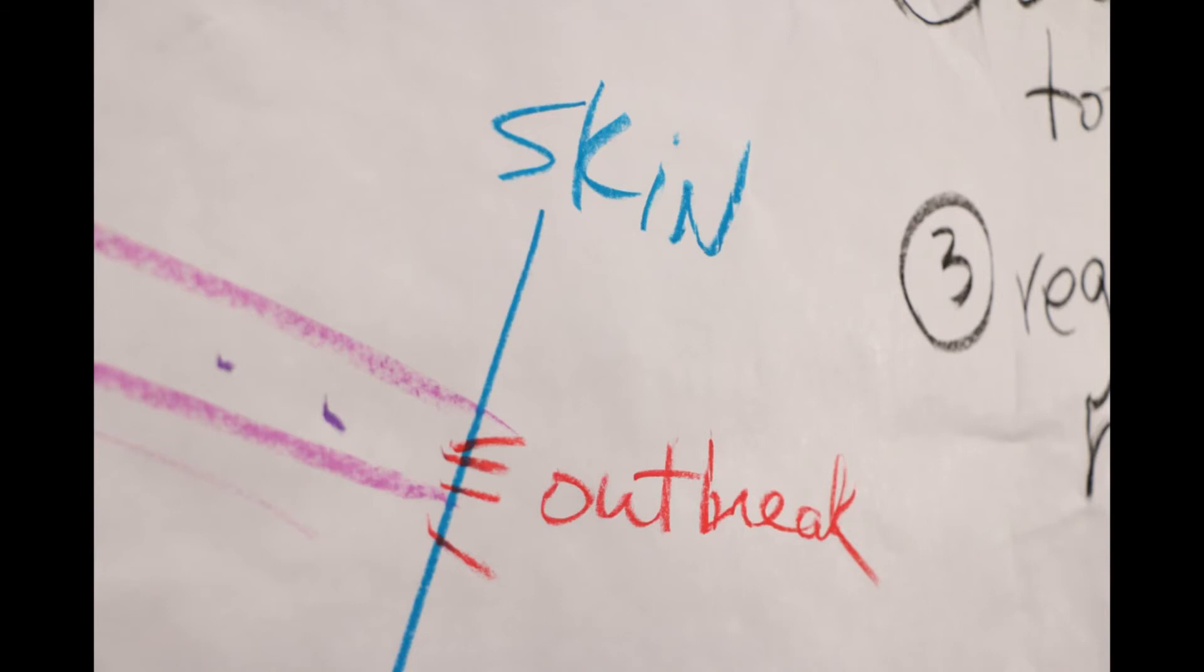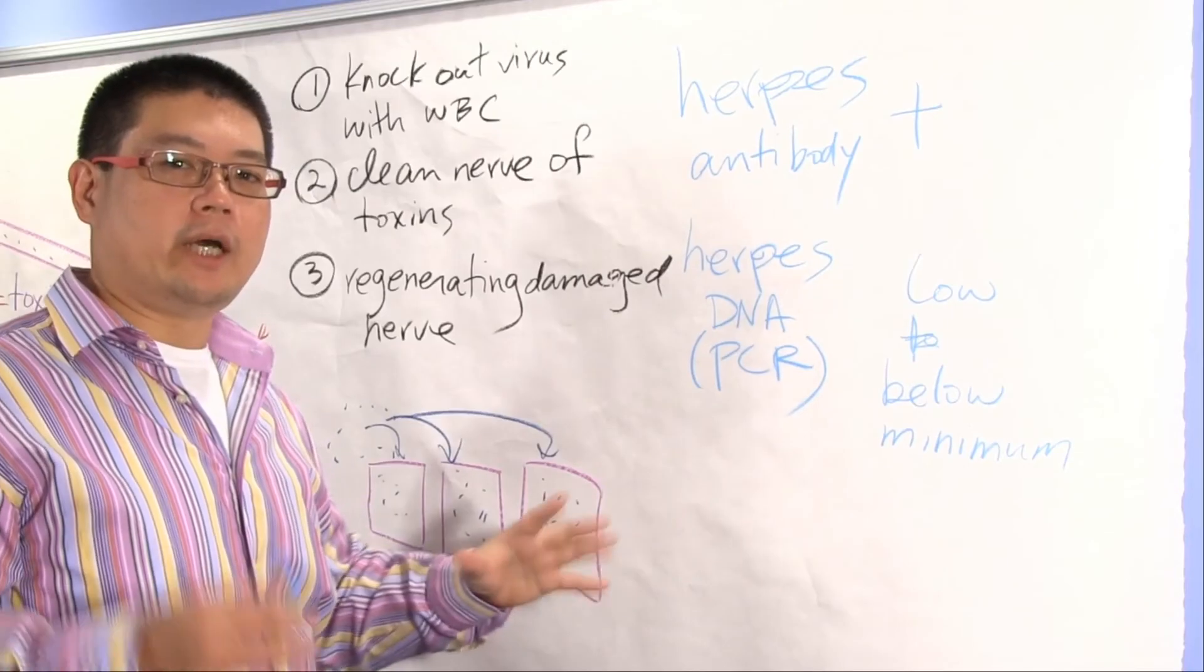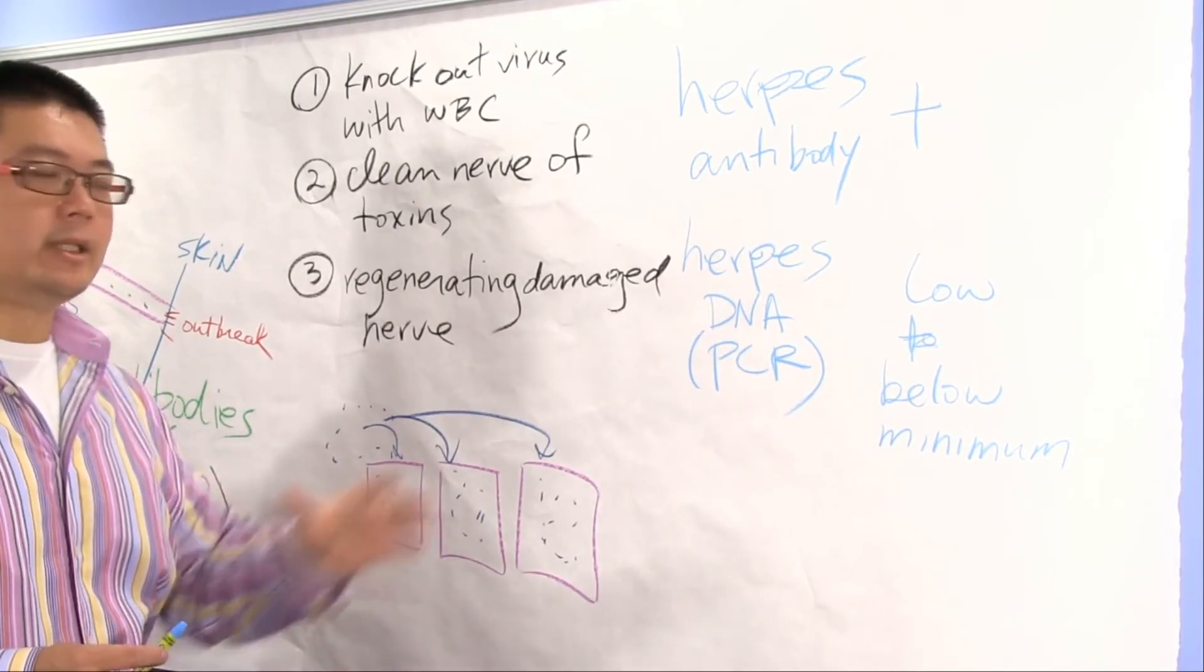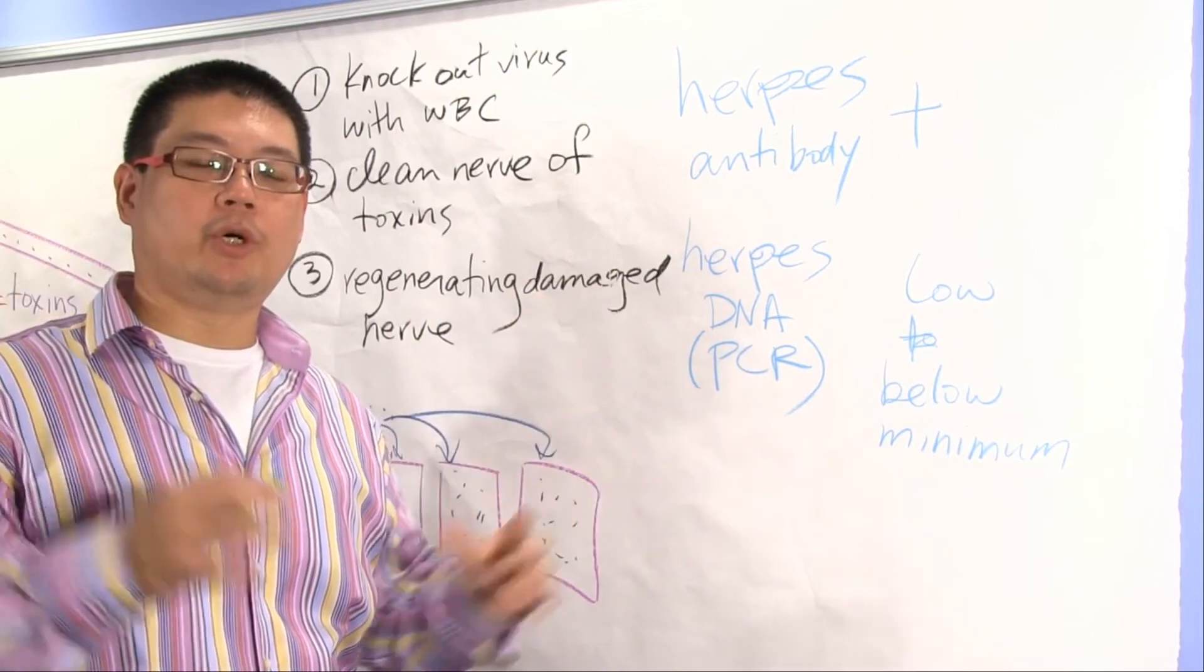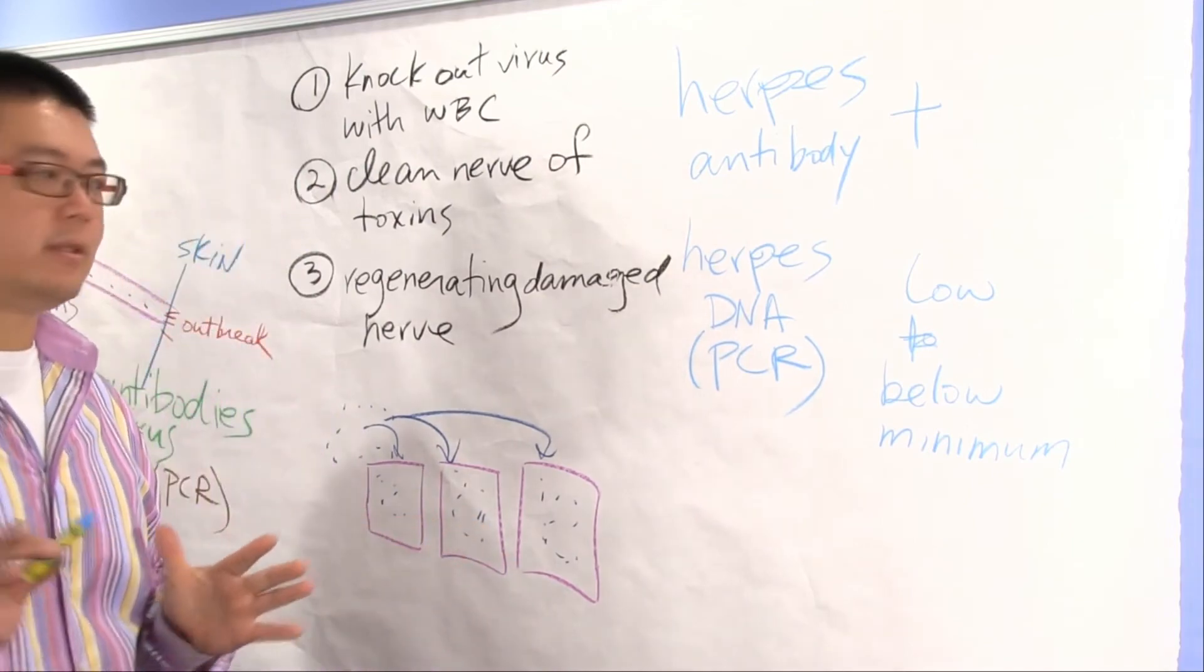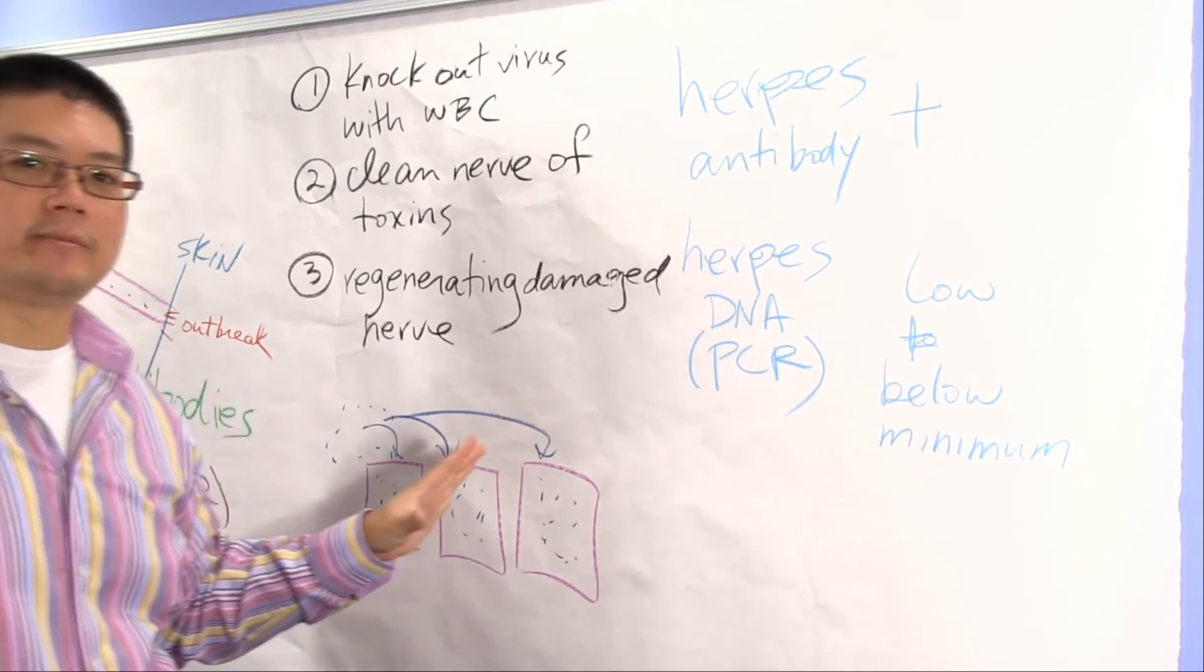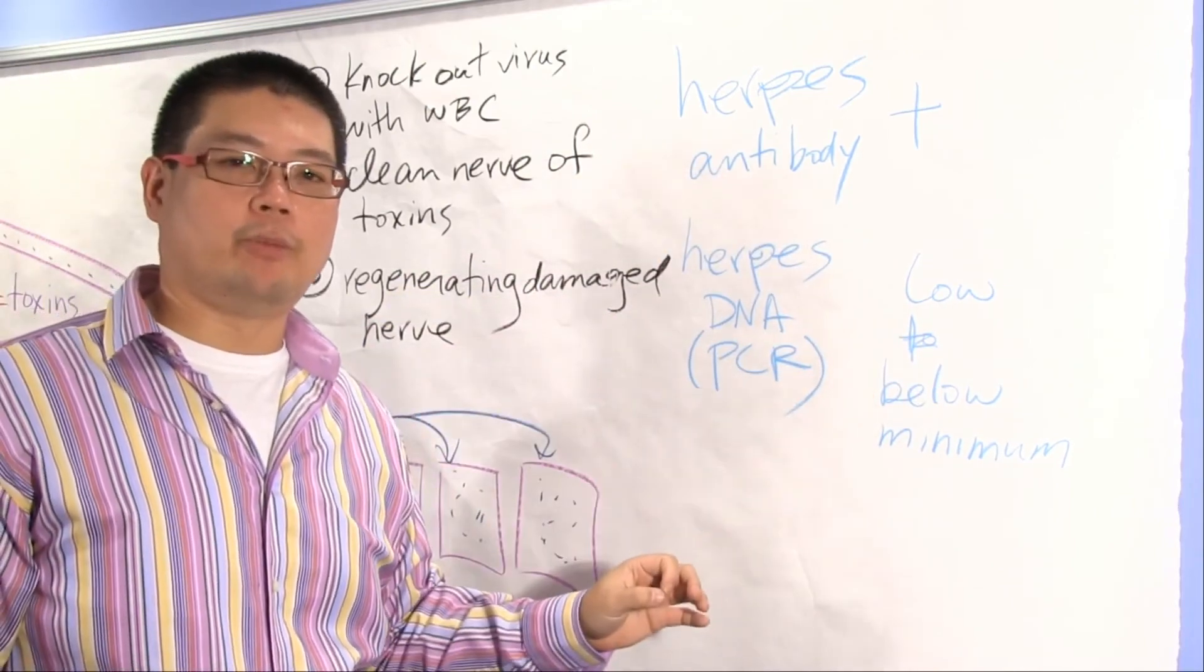In combination with no more skin outbreaks and a low DNA count on the herpes DNA test, we can now safely say you're not going to infect another person. This does not mean you get a free pass because you will get reinfected. But if you're safe and if you watch yourself, you can now live a life without skin outbreaks. Your herpes DNA test will tell you you don't have a herpes virus in your system.